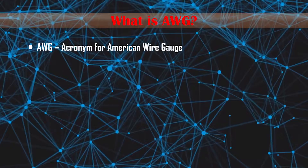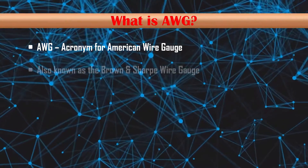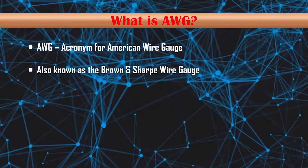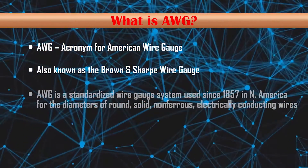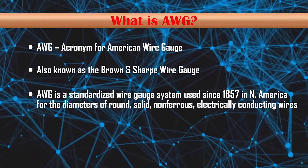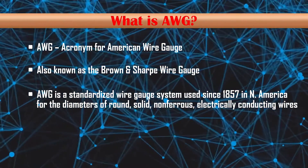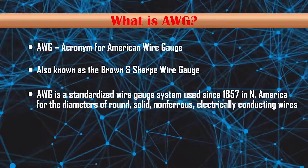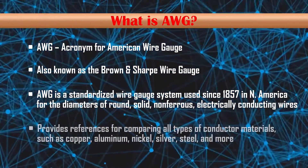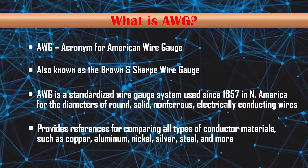AWG is the acronym for American Wire Gauge, also known as the Brown and Sharpe wire gauge. AWG is a standardized wire gauge system used since 1857, predominantly in North America, for the diameters of round solid non-ferrous electrically conducting wire. It also provides references for comparing all types of conductor materials such as copper.